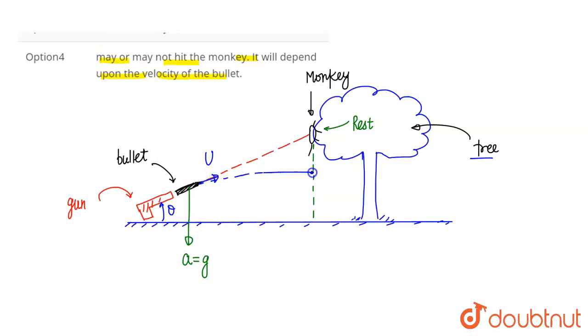But in this question, the monkey is not at rest. The moment the bullet leaves the barrel, at that moment the monkey starts falling downward in free fall. Free fall means monkey's acceleration is g.